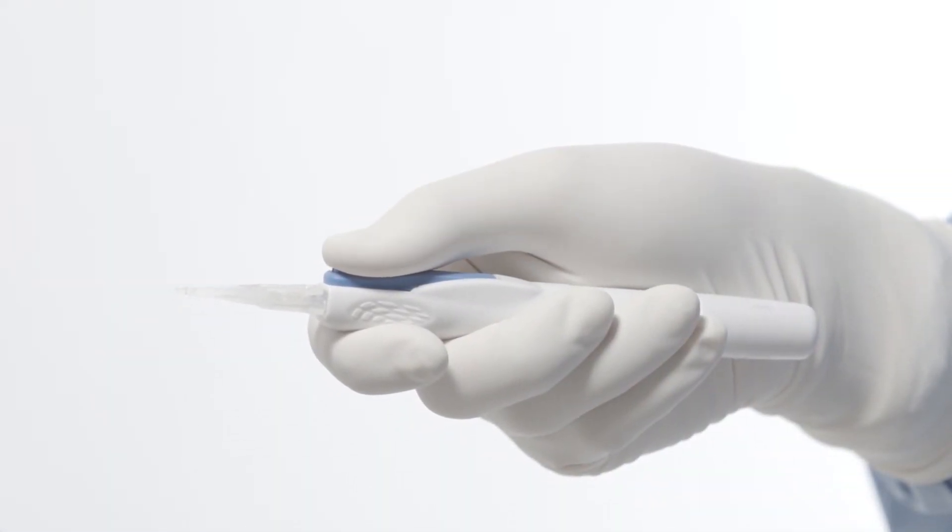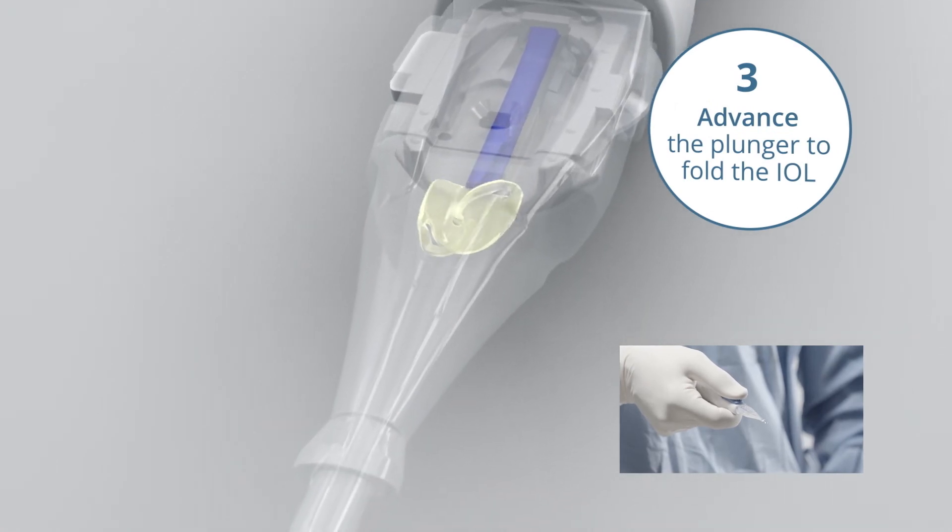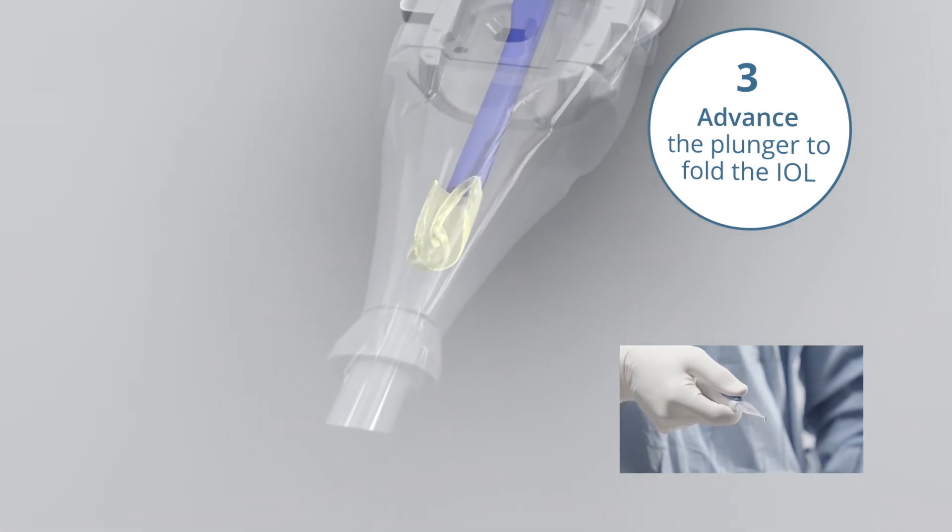Using your thumb, press the speed control lever to initiate delivery. You'll hear a click when the CO2 mechanism activates. Then continue pressing the speed control lever to advance the IOL all the way to the pause location for inspection.